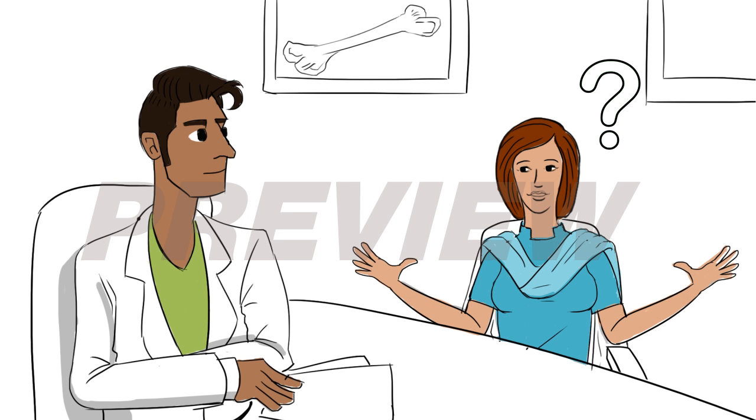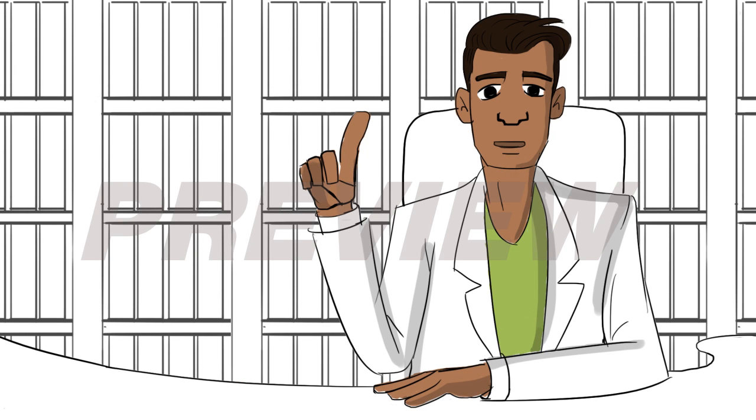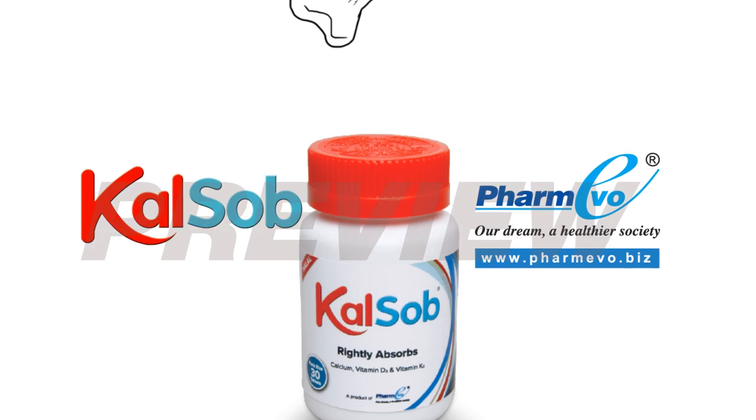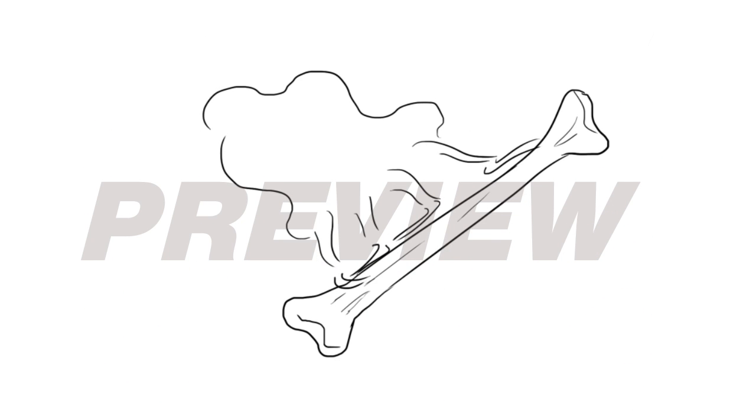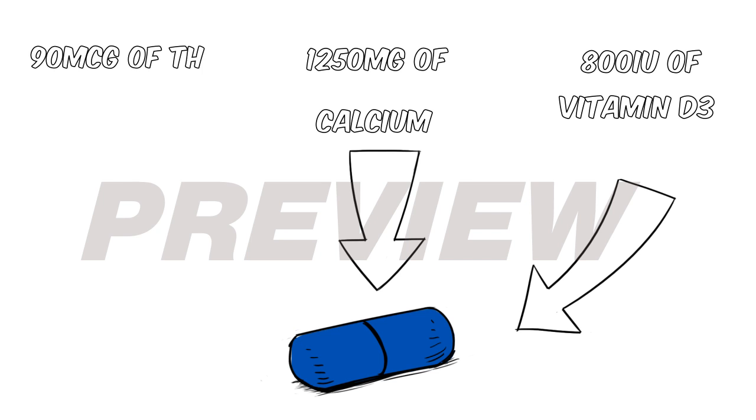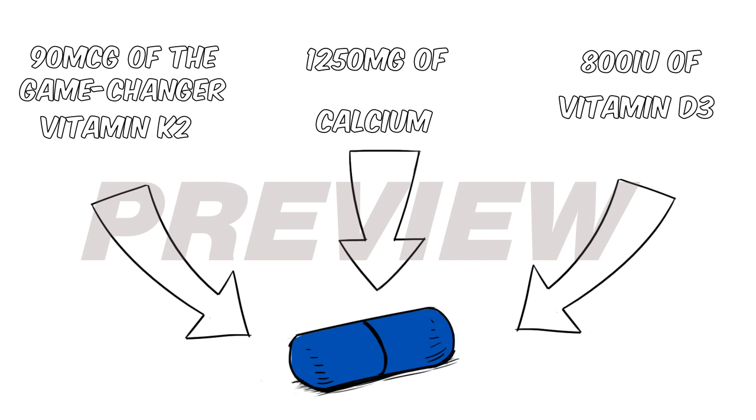Shiza questioned how she could direct the calcium to her bones. The doctor introduced her to CalSob, PharmEvo's revolutionary solution for bone health and beyond. CalSob rightly absorbs calcium into bones and contains 1,250 milligrams of calcium, 800 IU of vitamin D3, and 90 micrograms of the game-changer vitamin K2.